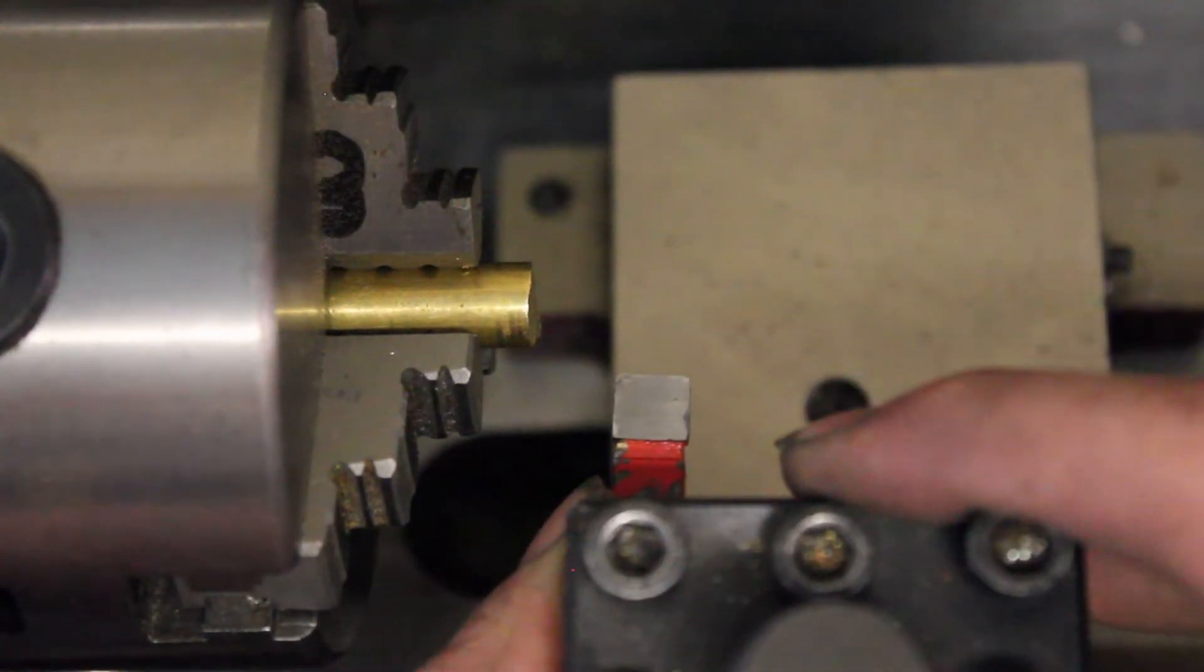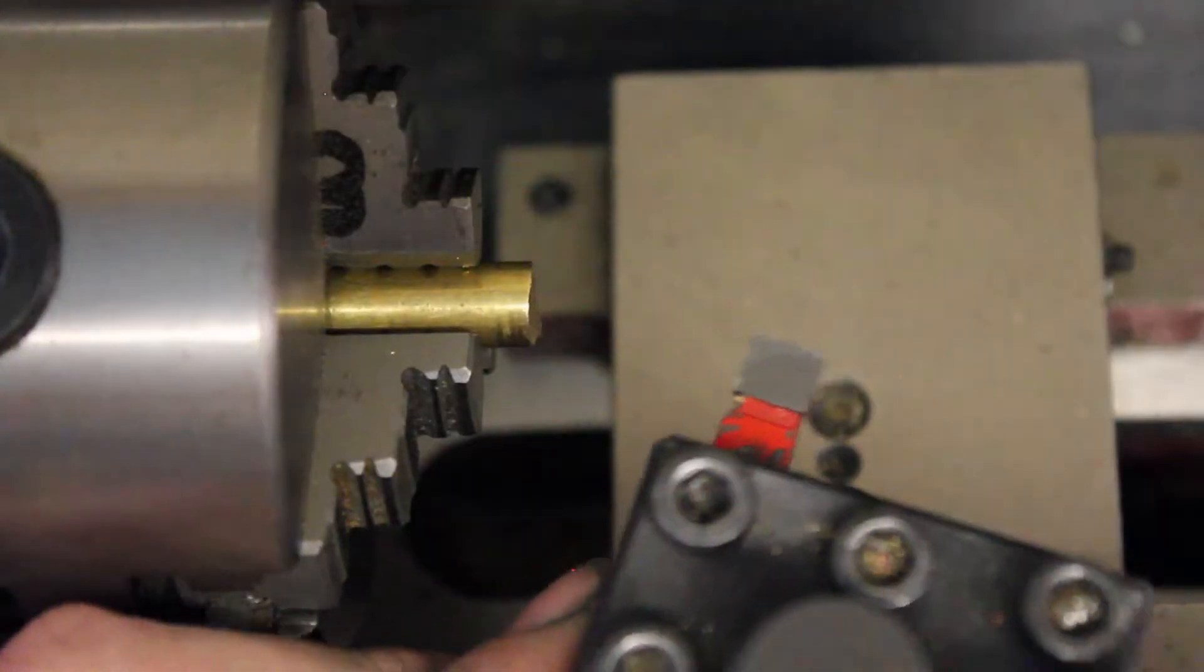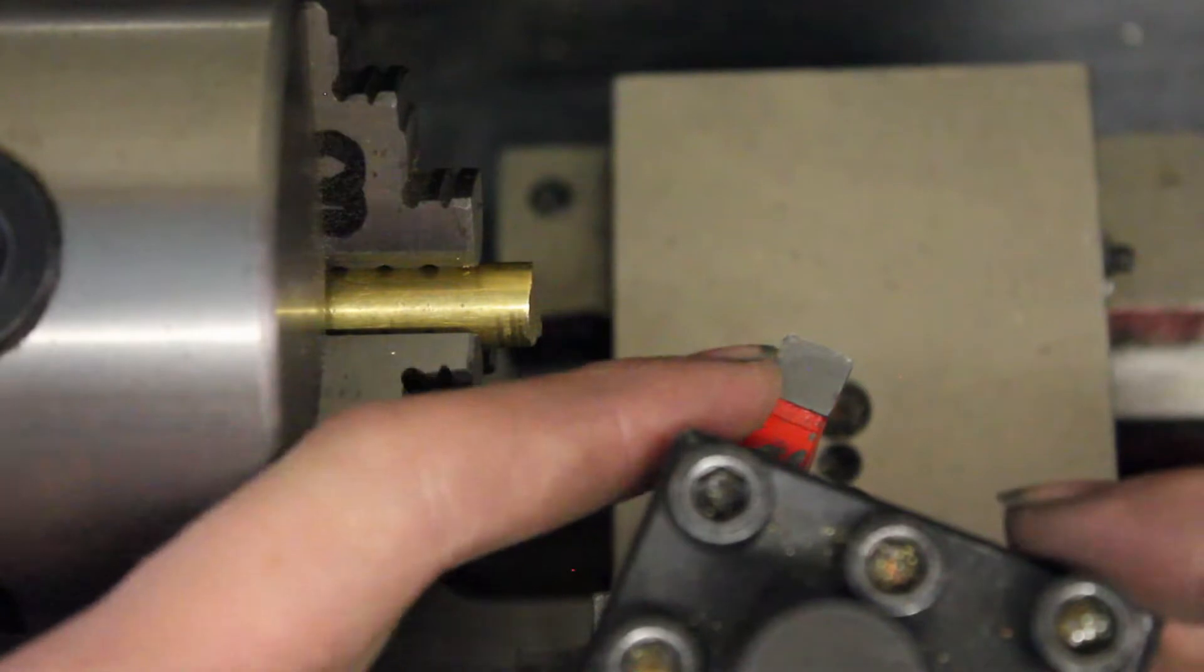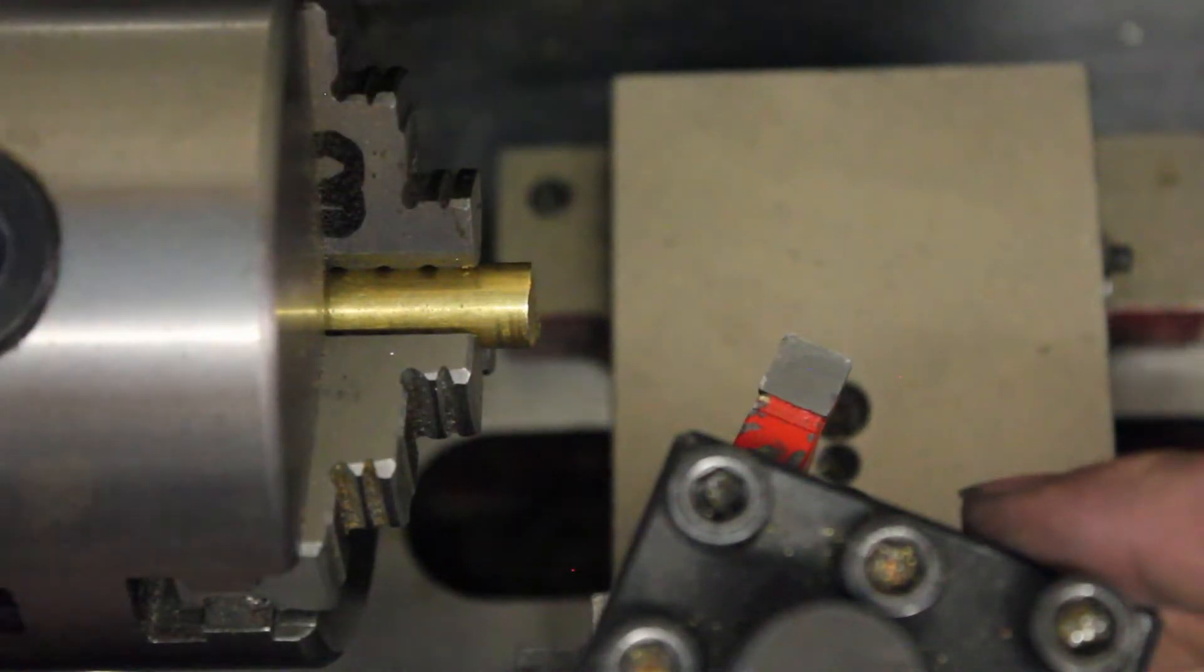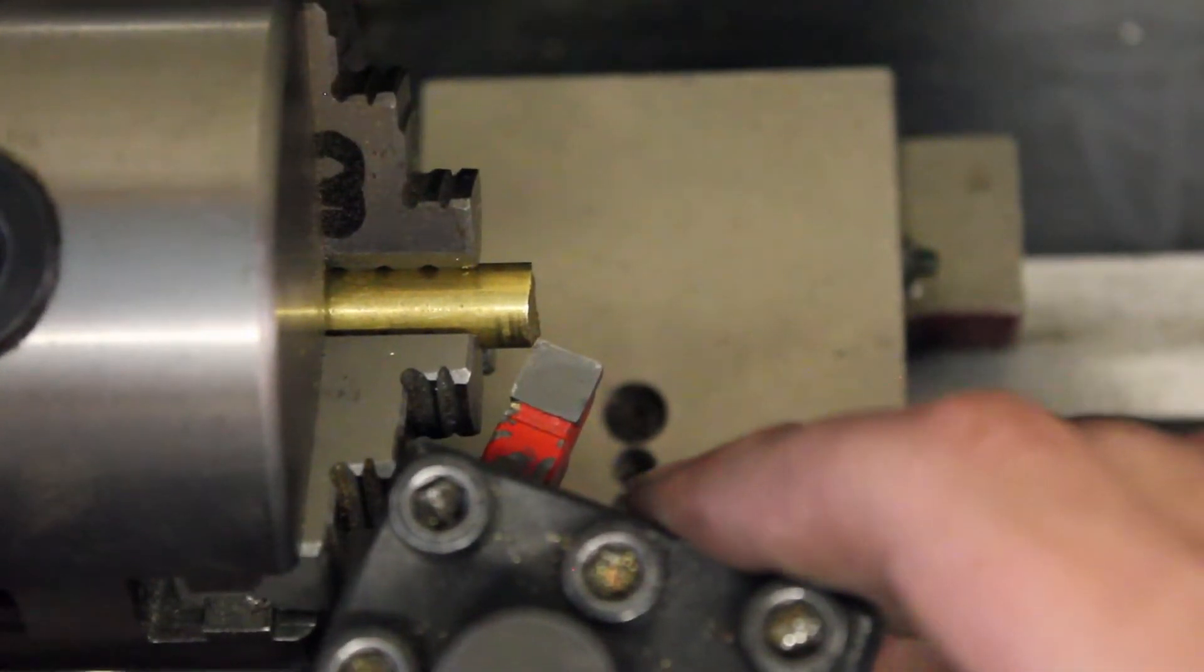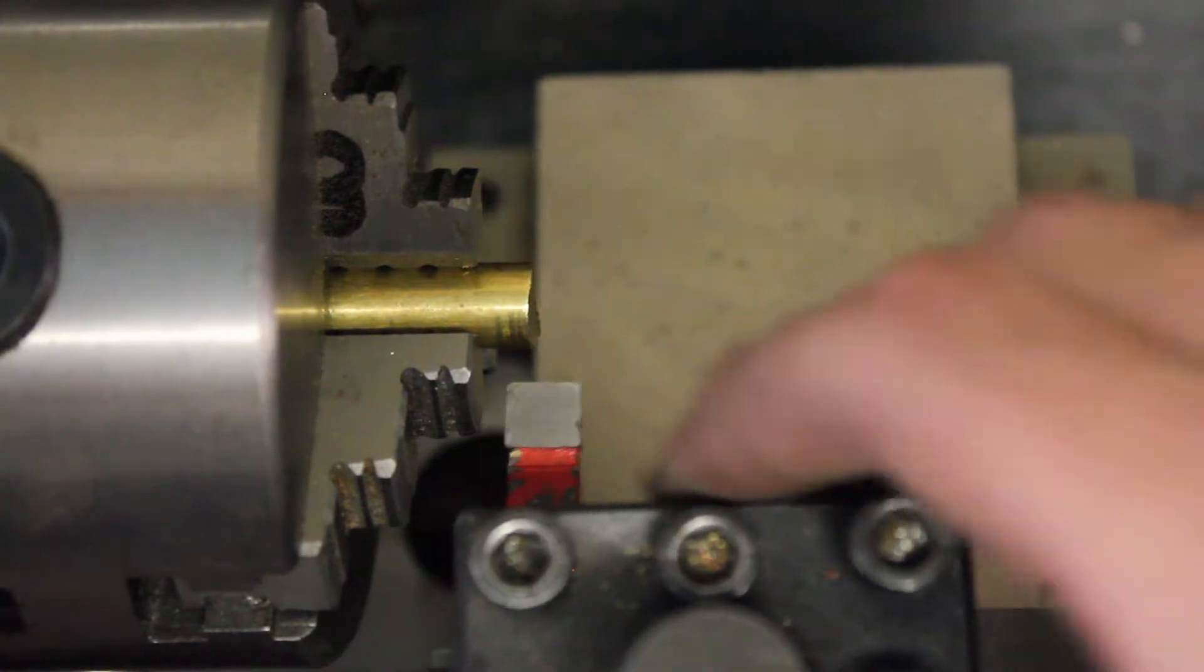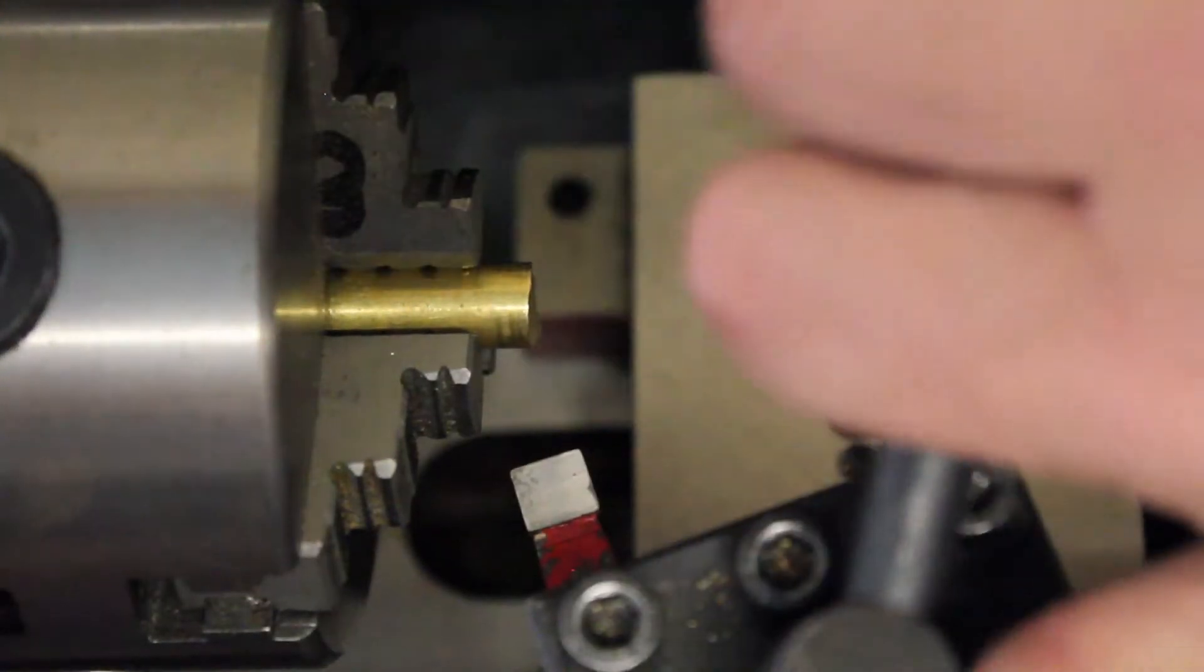You don't want any part of your tool to be on the other side like this because now your cutting edge can't touch your brass right here or your stock without touching some other part of the tool first. So it has to be facing this direction so your cutting edge is forward.